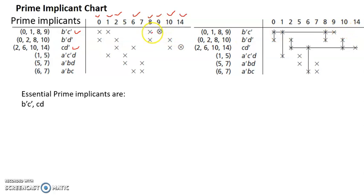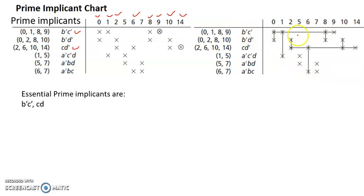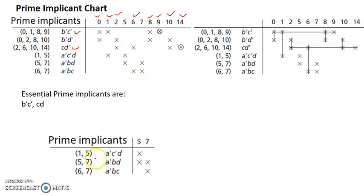Because of the essential prime implicants, all four covered terms are crossed out. Then because of this one it covers all these terms — cross those out too. Once we cross those out, any terms no longer required are also crossed out. So everything that has been covered gets crossed out. Once I cross out all those covered minterms, what is left uncovered now is minterm 5 and minterm 7. Now discard all the crossed-out items and retain only the uncovered terms.